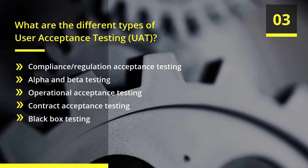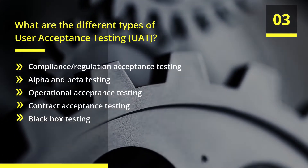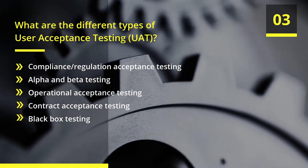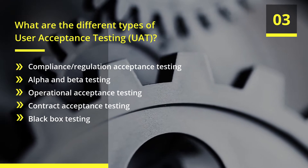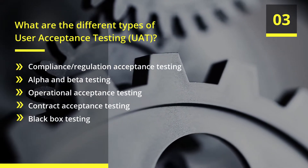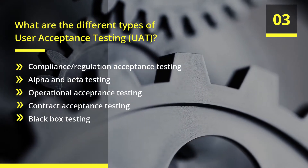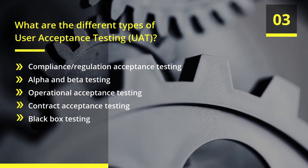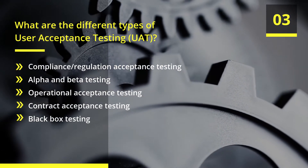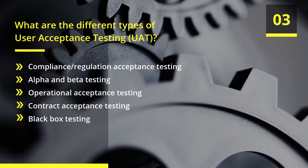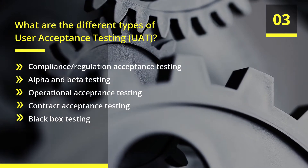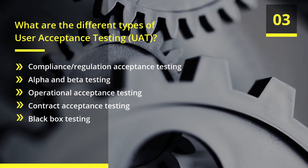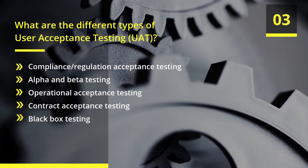What are the different types of user acceptance testing? First, compliance/regulation acceptance testing. Second, alpha and beta testing. Third, operational acceptance testing. Fourth, contract acceptance testing. Fifth, black box testing.